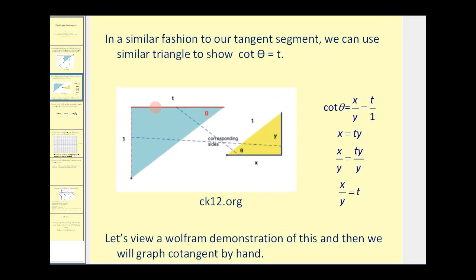In a similar fashion to our tangent segment, we can use similar triangles to show that cotangent theta is equal to t, this being the cotangent segment. When we have an angle in standard position, cotangent theta would be equal to x over y. So we want to show that t is equal to x over y.